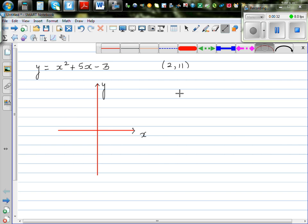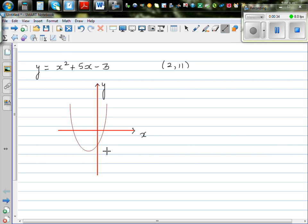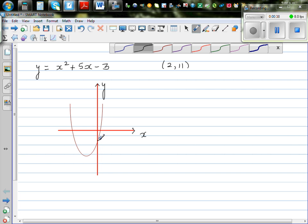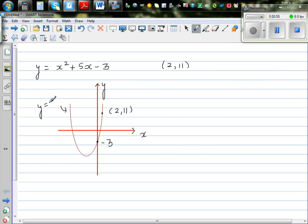This is a basic parabola, so it would be somewhat like this. One thing that I can see very clearly is your y intercept is negative 3. I'm not interested in the x intercept. And say this point is somewhere, this point is 2 comma 11. This is the graph of y equals x squared plus 5x minus 3.